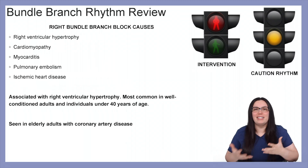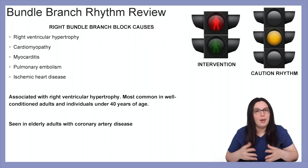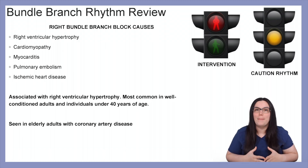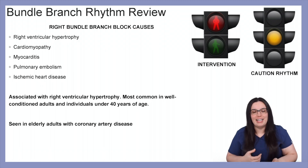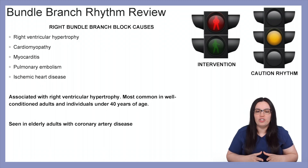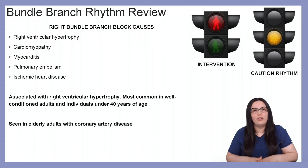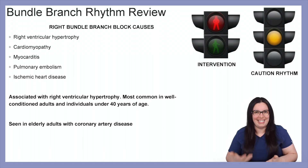So what causes these right bundle branch blocks? We can look at right ventricular hypertrophy, cardiomyopathy, myocarditis, pulmonary embolism, and ischemic heart disease. They're often associated with right ventricular hypertrophy, most common in well-conditioned adults as well as individuals under the age of 40 years. They can also be seen in elderly adults that have an underlying coronary artery disease.